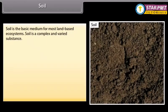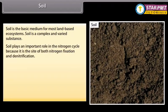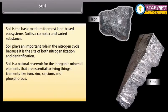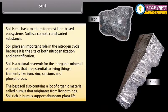Soil is the basic medium for most land-based ecosystems. It is a complex and varied substance that plays an important role in the nitrogen cycle as the site of both nitrogen fixation and denitrification. Soil is a natural reservoir for inorganic mineral elements essential to living things — elements like iron, zinc, calcium, and phosphorus. The best soil also contains a lot of organic material called humus that originates from living things; soil rich in humus supports abundant plant life.